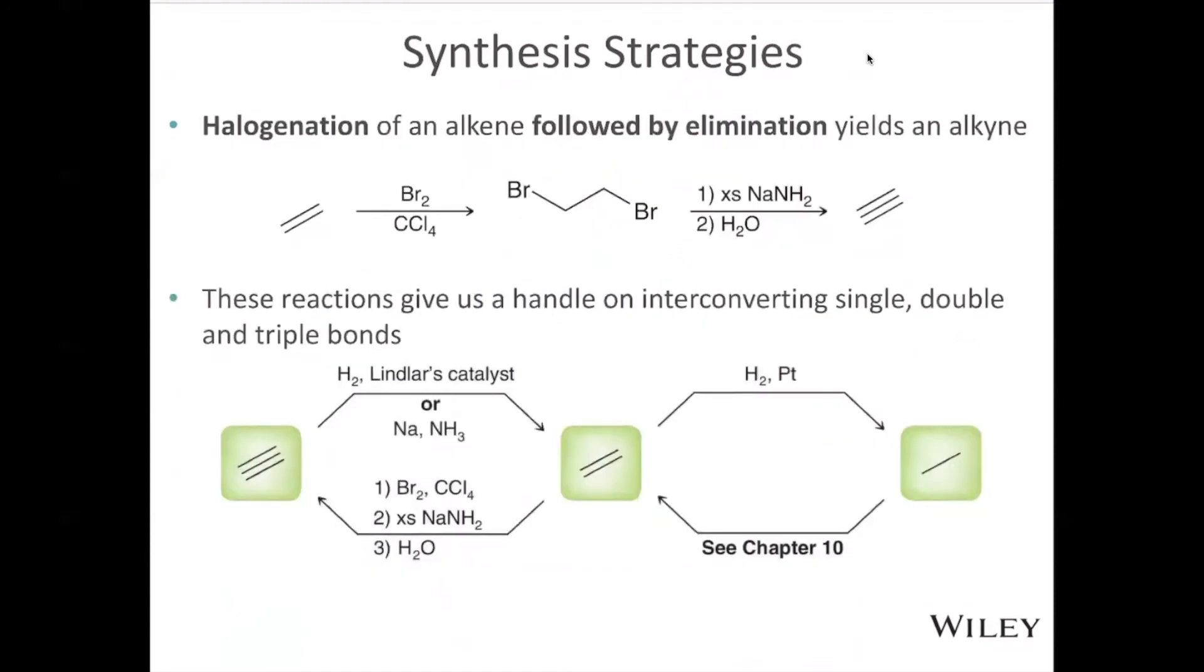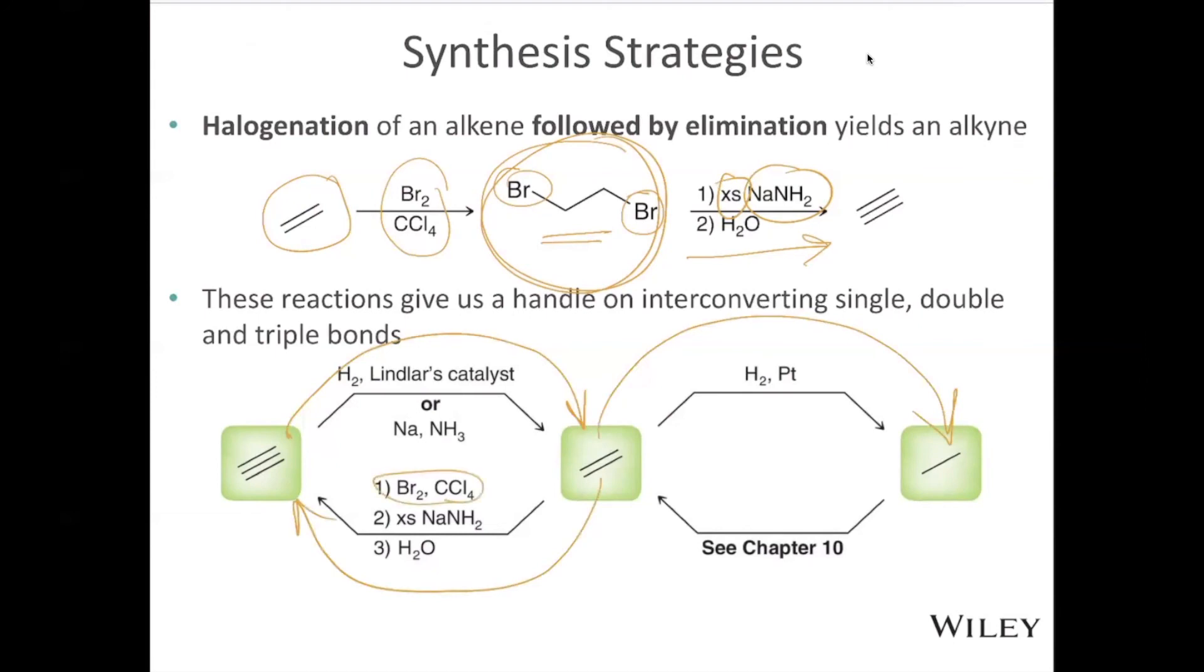Some additional things that we can do. We have an alkene. We can take it to the alkane with the dihalide using Br2 and CCl4. Once we have this dihalide, we can bring it back to the alkyne using the sodium amide and water. Remember excess so that we can take off the HBr once and then take off the HBr again. We've talked about how to get from an alkyne to an alkene and from an alkene to an alkane. And now we've talked about how to get from an alkene to an alkyne. It's a two-step process. We have to add halogens across the double bond and then remove them subsequently.